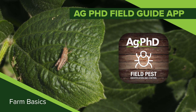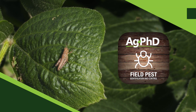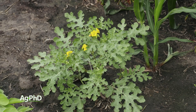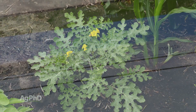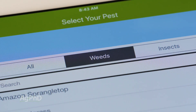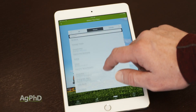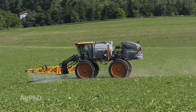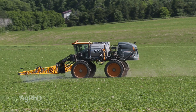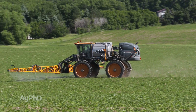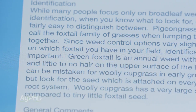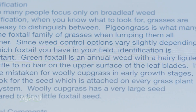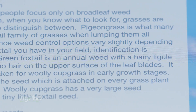Ag PhD Field Guide app. So you hear 'field guide' and you say, well what does that necessarily mean? There's a lot of things out in your fields. One of them that we're going to talk about is weeds. We've got a number of weeds listed on the Ag PhD Field Guide app where Brian and I have gone through and looked at what controls these weeds in different crops, and we're also telling you a little bit more about the background of these weeds so you understand them better.